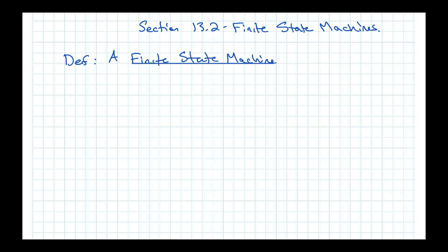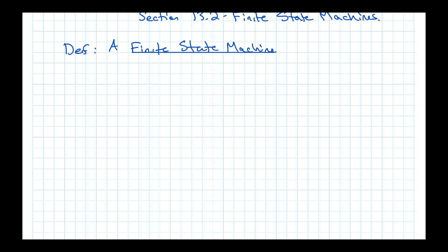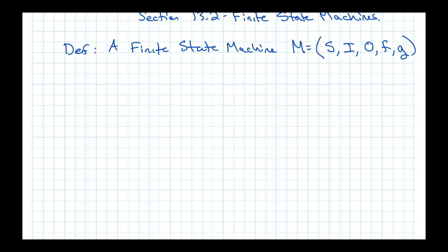That's actually it, but we need a little bit longer description. A finite state machine, which we can write as M equals a bunch of parts — S, I, O, f, g — you probably won't see them written quite like this very often, but each of those things is part of the state machine that you need. So a finite state machine consists of the following components.